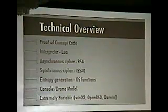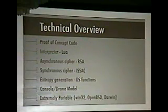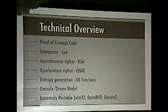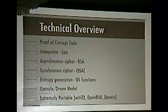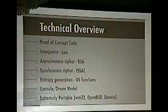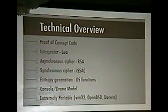Here is a technical overview. We have written proof-of-concept code to prove that this idea works. The interpreter is Lua — many of you may know Lua as an extension language for games like World of Warcraft. We use an asymmetric cipher called RSA, which is used for the initial handshaking between the client and server. It's a computationally expensive operation, so once handshaking is done, we move to a symmetric cipher called ISAAC, where the clone and drone communicate by symmetric cipher.